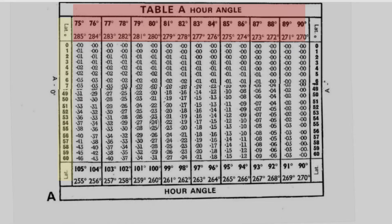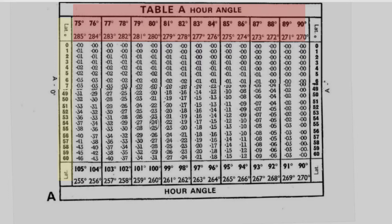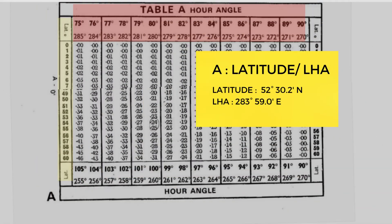I'm also adjusting the latitude so we can see the tabulation better. Since our LHA of 283° 59.0' East is very close to 284°, we can round it up to 284°.